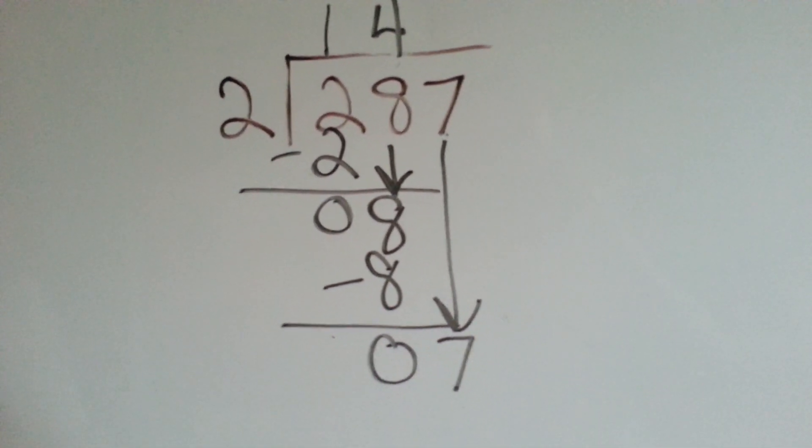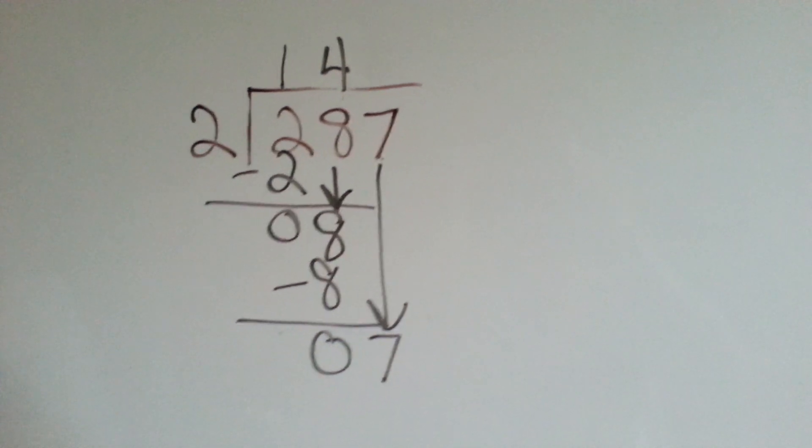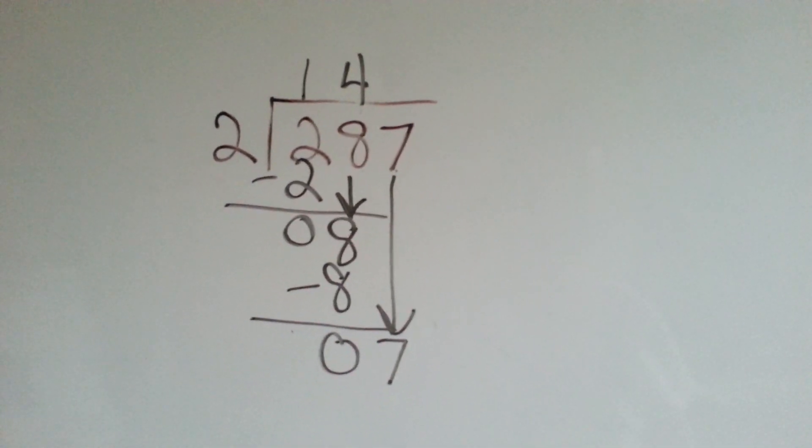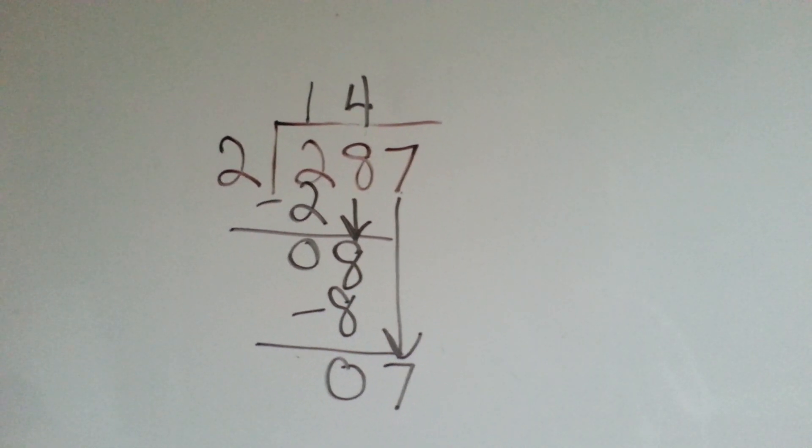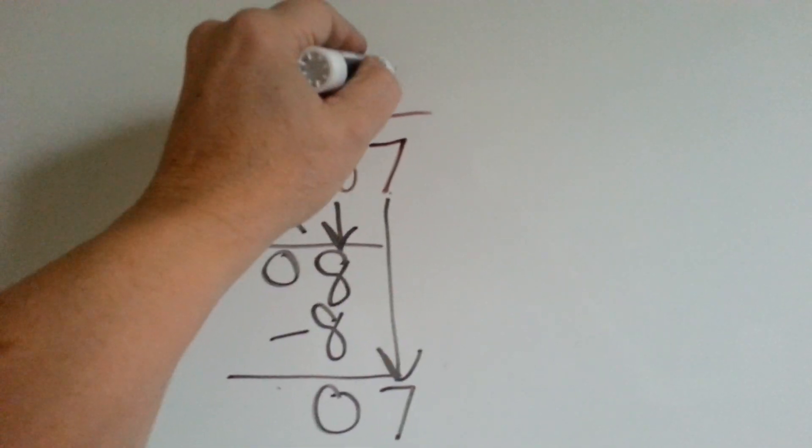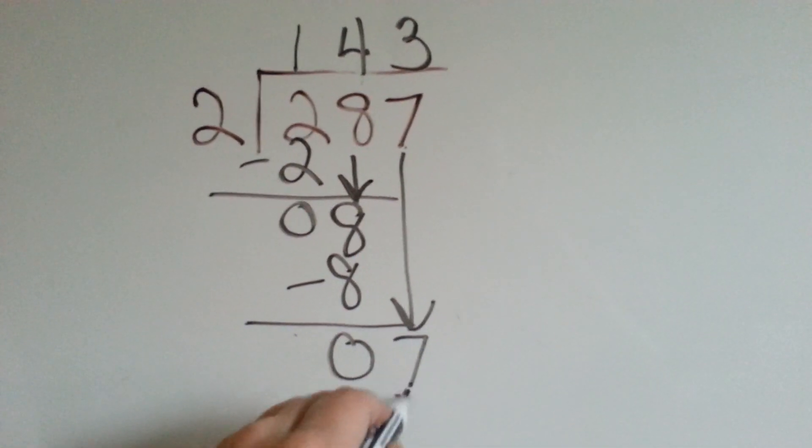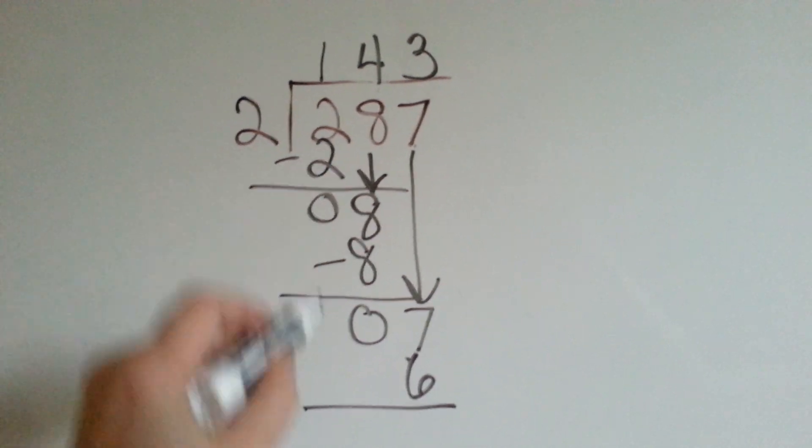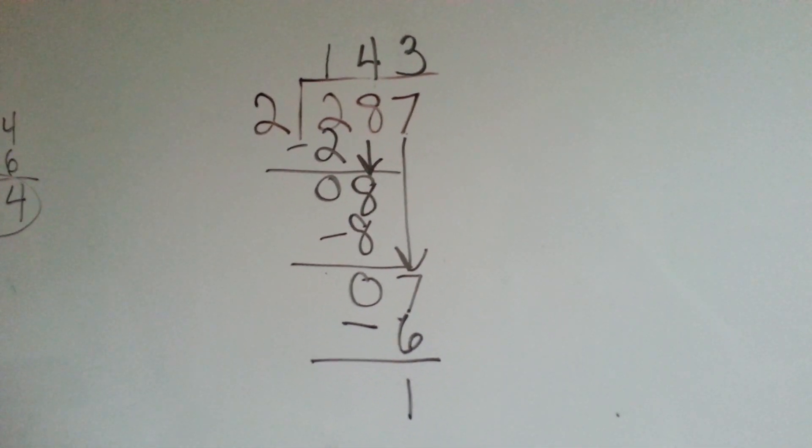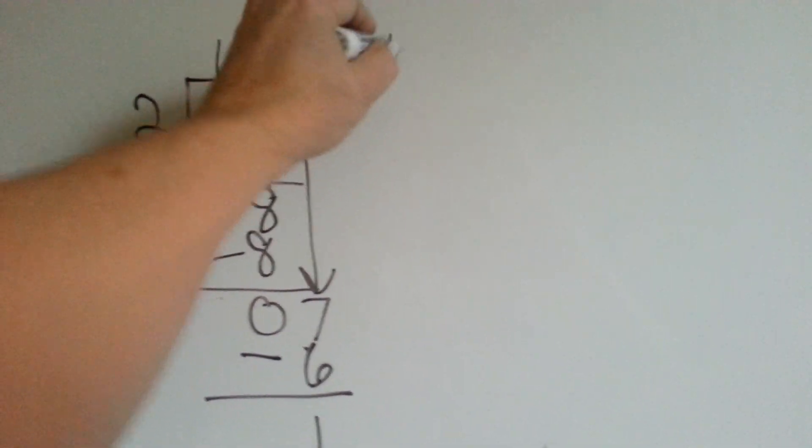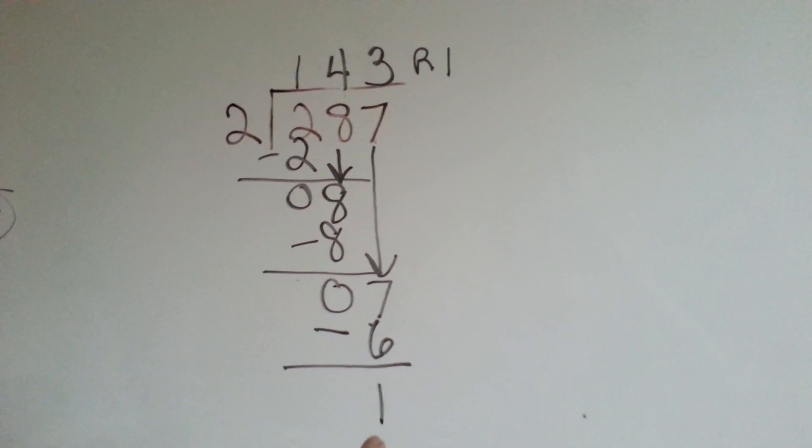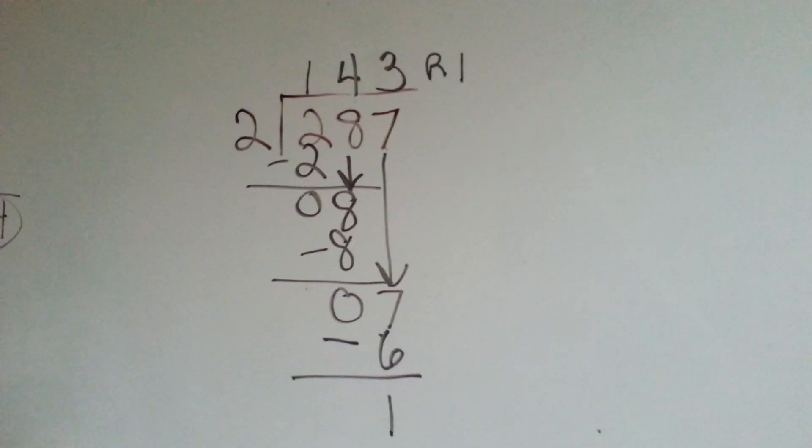And now it's the 7's turn to come down. 2 goes into 7 how many times? What 2 times table answer, what product, gets you close to 7 but doesn't go over it? 2 times 2 is 4. 2 times 3 is 6. So let's try 3. 2 times 3 is 6. We're going to do our subtraction and we get 1. Now, you can write remainder 1. Sometimes people put the 1 over the 2 and say it's a half. But in this case we're just going to leave it as remainder 1.